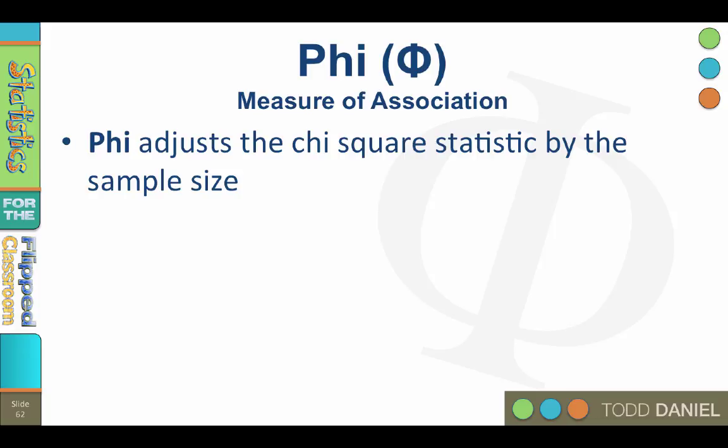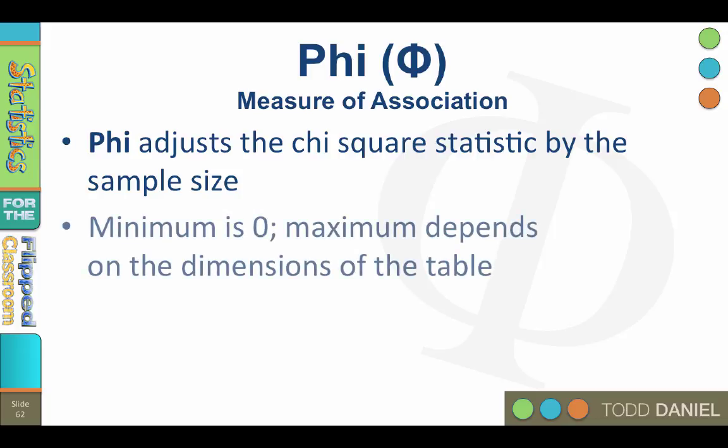Phi is a measure of association that adjusts the chi-square statistic by the sample size. If you are reporting phi, it should be because you are using a cross-tabulation. The lowest possible value for phi is 0, and the maximum depends upon the dimensions of the cross-tab table. For example, for a 3 by 4 table, you take the smaller of 3 and 4, which is 3 minus 1, so the maximum value is 2.